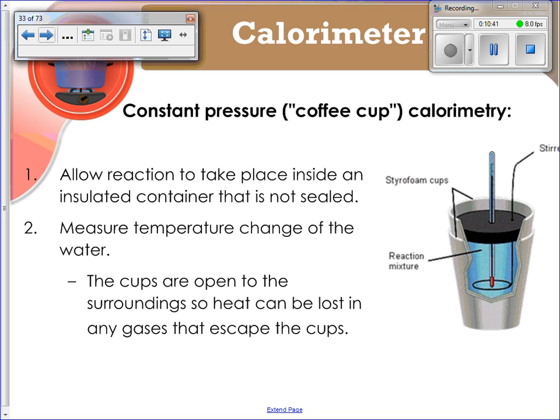The second type of calorimeter is going to be coffee cup calorimetry. This is open to the surroundings. This allows the reaction to take place inside the insulated container, but it's not sealed. You're going to measure the temperature change of the water, but it's important to note it's open to the surroundings, so heat can be lost in any gases that escape the cups, which makes it a little bit less accurate.